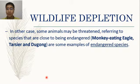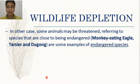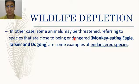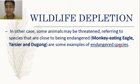When a population declines very rapidly, a species is considered threatened — close to becoming endangered and then extinct. Examples include the Philippine eagle, the tarsier, and the dugong, which are close to being endangered because they are threatened. These are examples of endangered species.